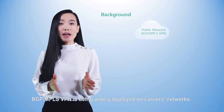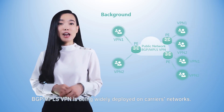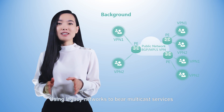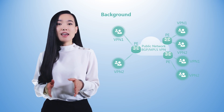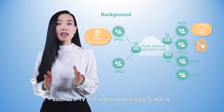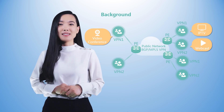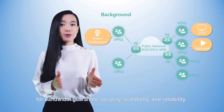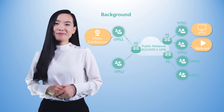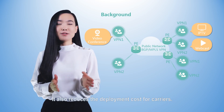BGP or MPLS VPN is being widely deployed on carriers' networks. Using MPLS networks to bear multicast services such as IPTV and video conferencing is able to handle multicast service requirements for bandwidth guarantee, security, scalability, and reliability. It also reduces the deployment cost for carriers.